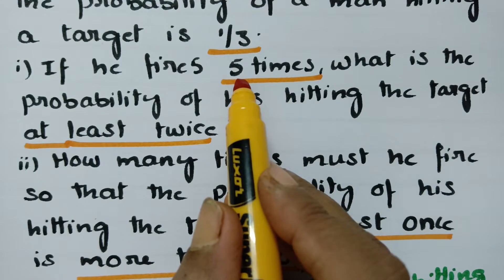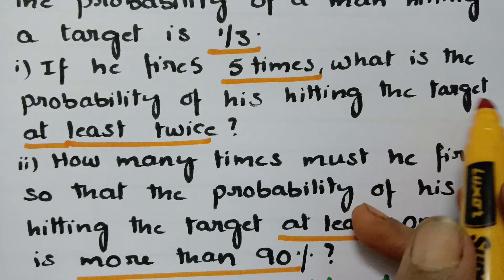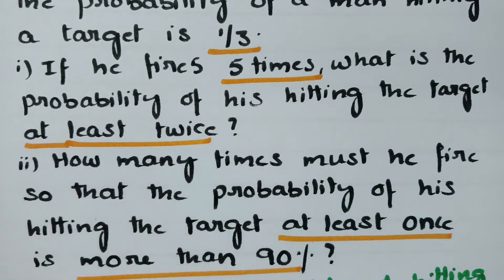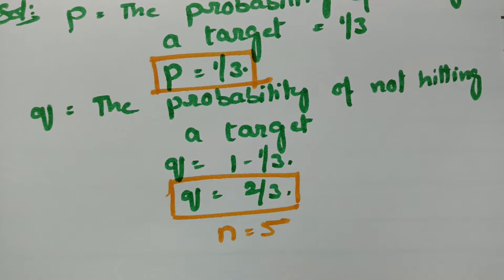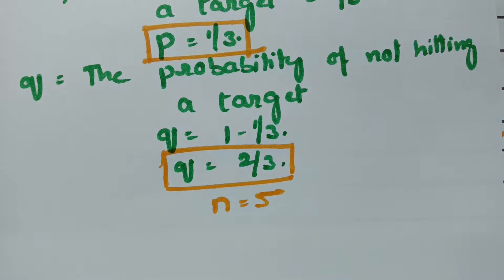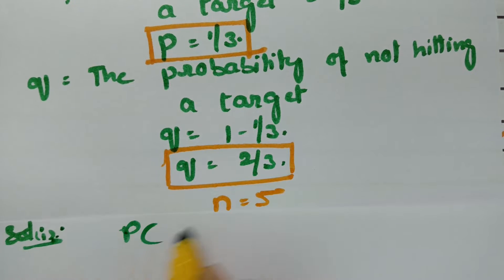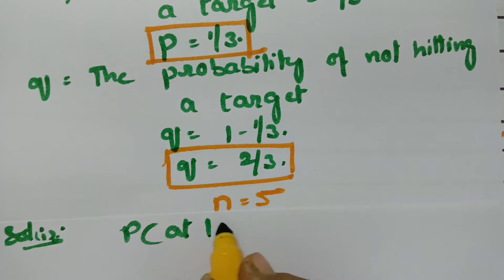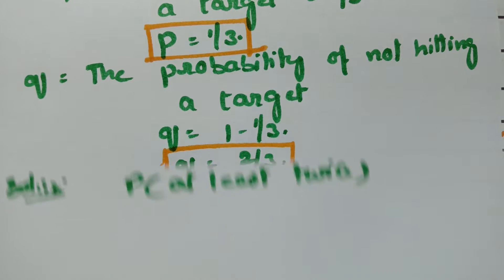If he fires 5 times, n value is equal to 5. What is the probability of his hitting the target at least twice? From the question, n value is 5. Solution 1: probability of hitting a target at least twice for n throws.